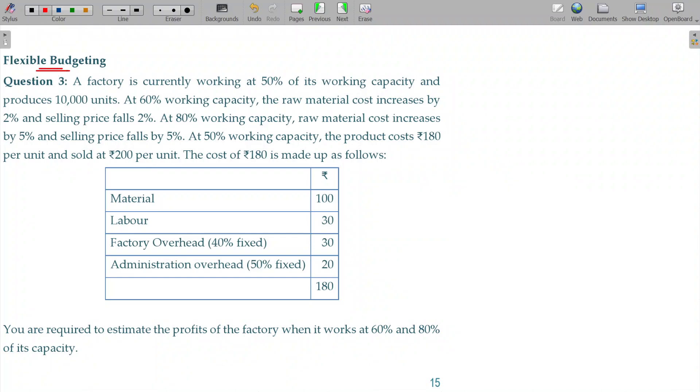Let's prepare the flexible budget. Flexible budget brings together a series of different levels of operation - what is the cost, what is the profit. The factory is currently working at 50 percent of its working capacity and produces 10,000 units. So 10,000 units produced at this percentage capacity, 50% capacity.